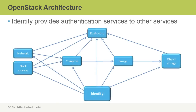The last component we're going to talk about is the identity component. Identity takes care of authentication services for all of the other services and components, so it's quite important because it determines who can do what within the OpenStack infrastructure you have set up. OpenStack is a stack — that's why it's got the word stack in its name — and all of these components operate together to provide that infrastructure as a service on which you can build your virtual environments.